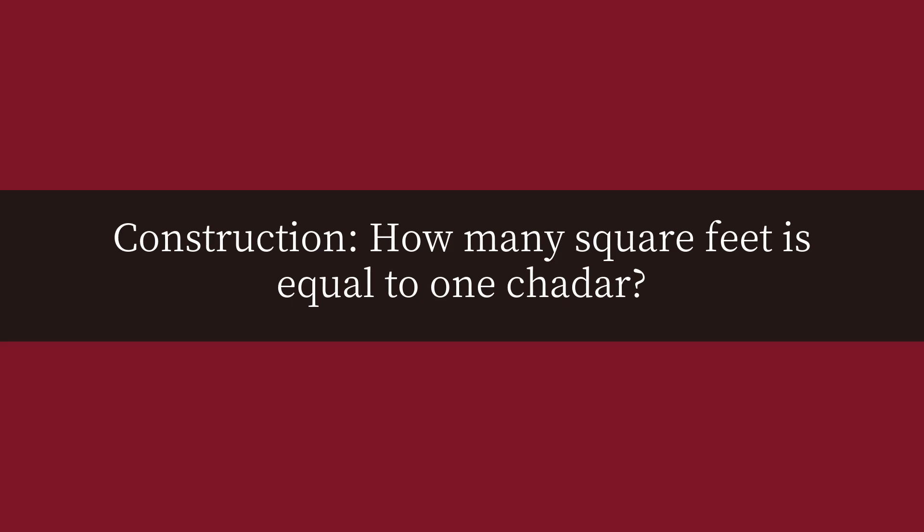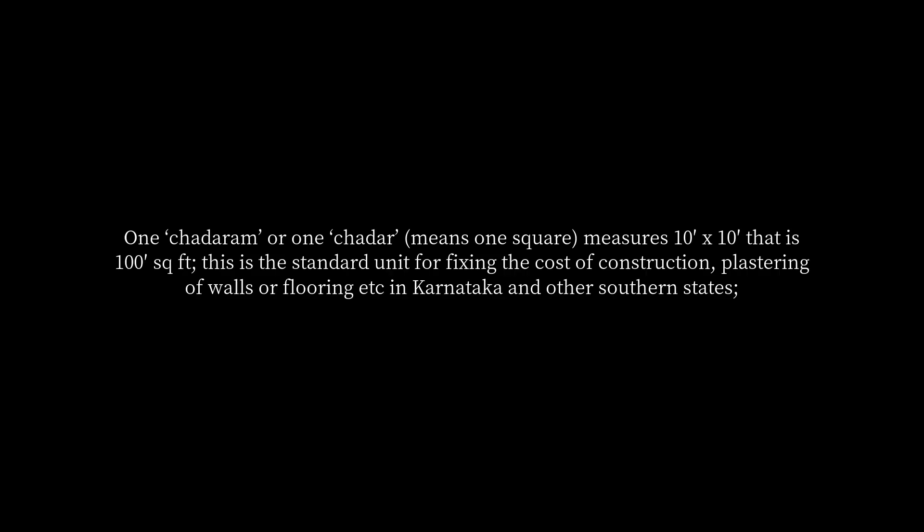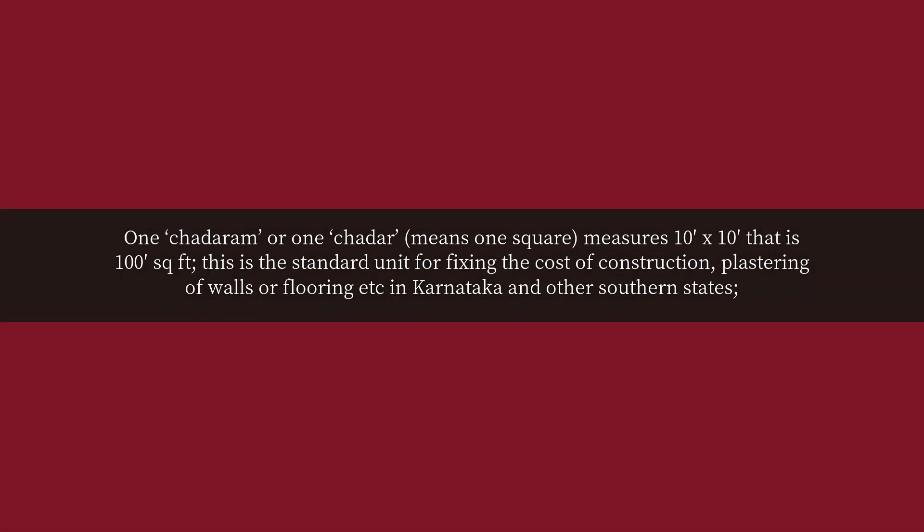Construction. How many square feet is equal to one chadar? One chadarum, or one chadar, means one square, measures 10 x 10, that is 100 square feet. This is the standard unit for fixing the cost of construction, plastering of walls or flooring etc., in Karnataka and other southern states.